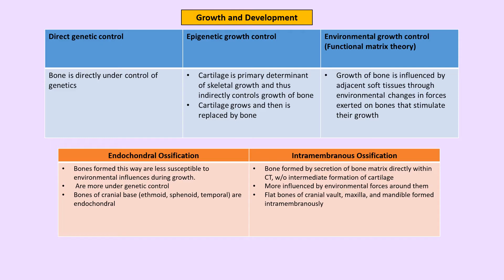The different theories of growth and development include: the direct genetic control theory, which states bone is directly under genetic control; the epigenetic theory, which states cartilage is the determinant of bone growth; and the most accepted theory — the functional matrix theory — which states that growth of bone is influenced by soft tissues, which are in turn influenced by environmental changes.